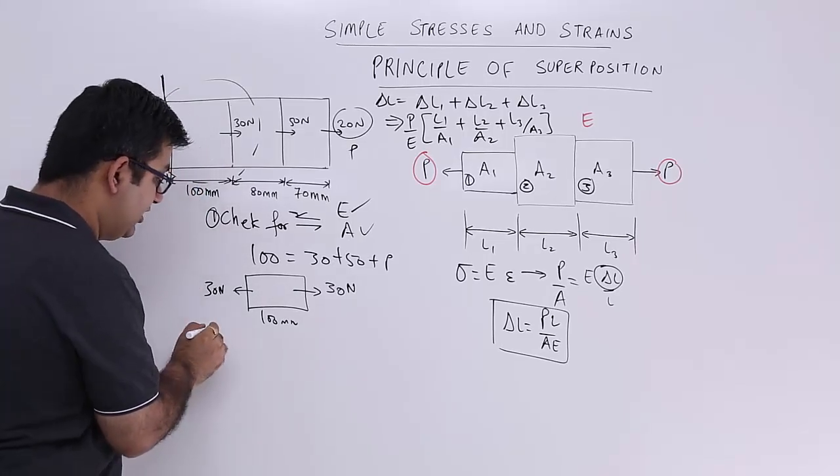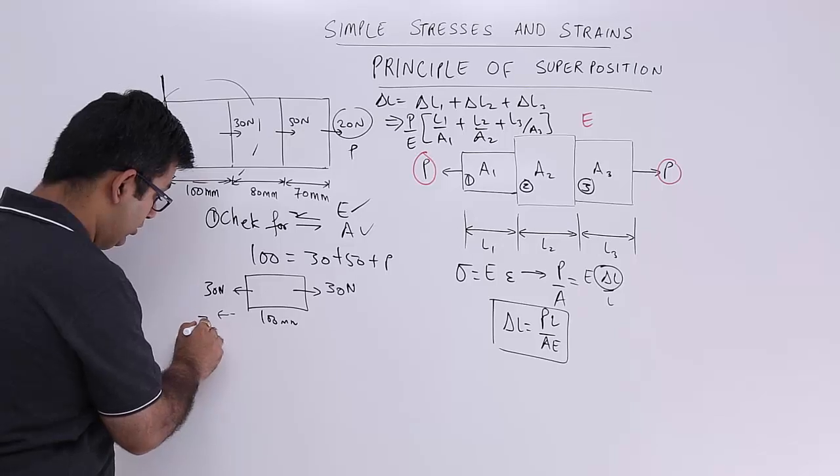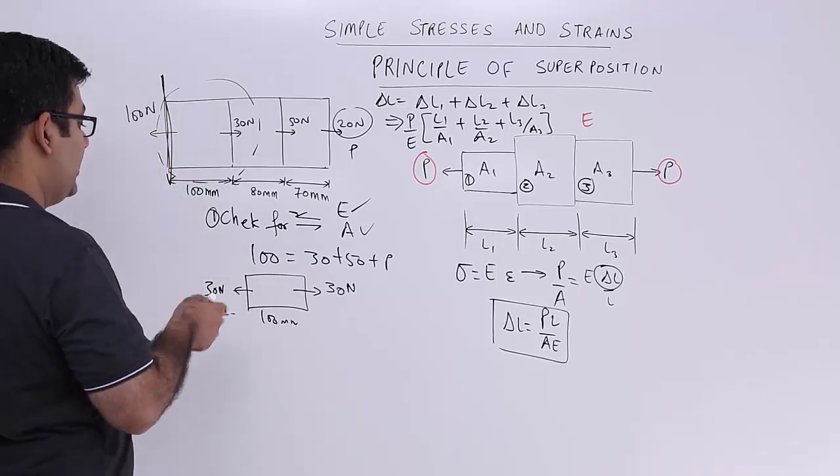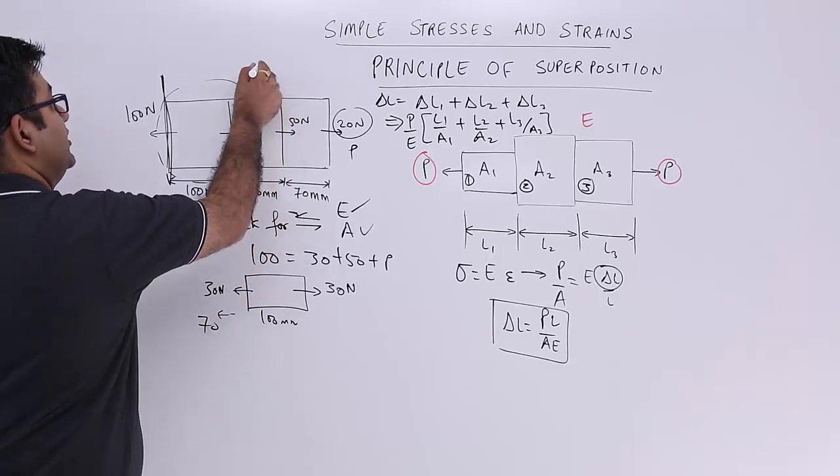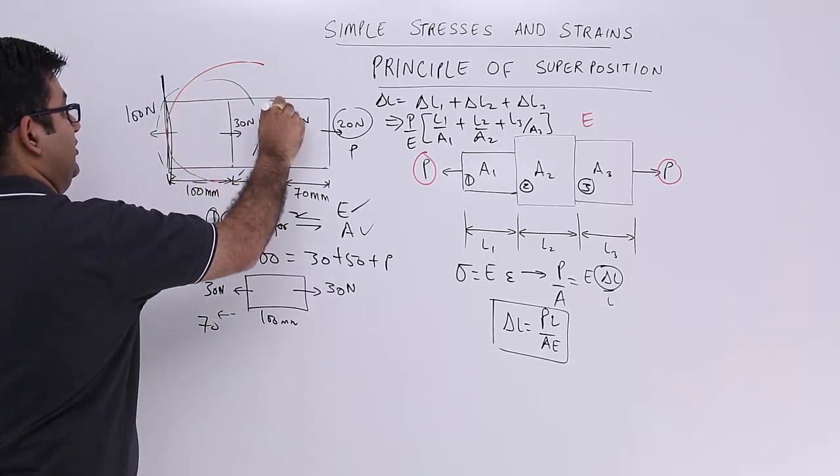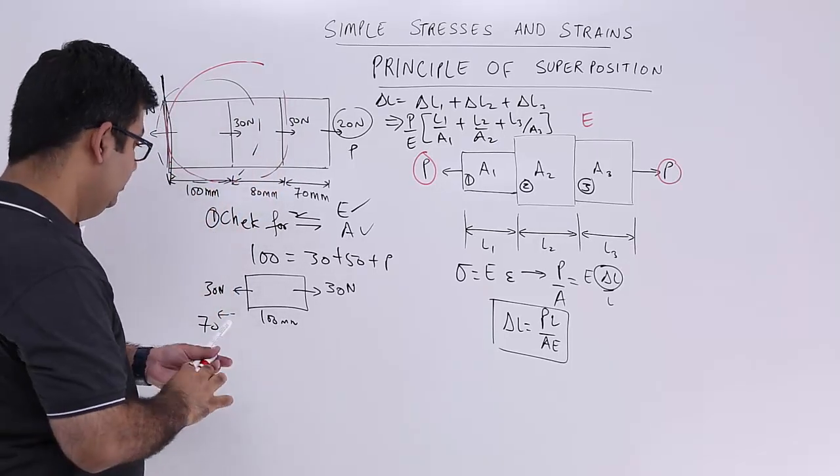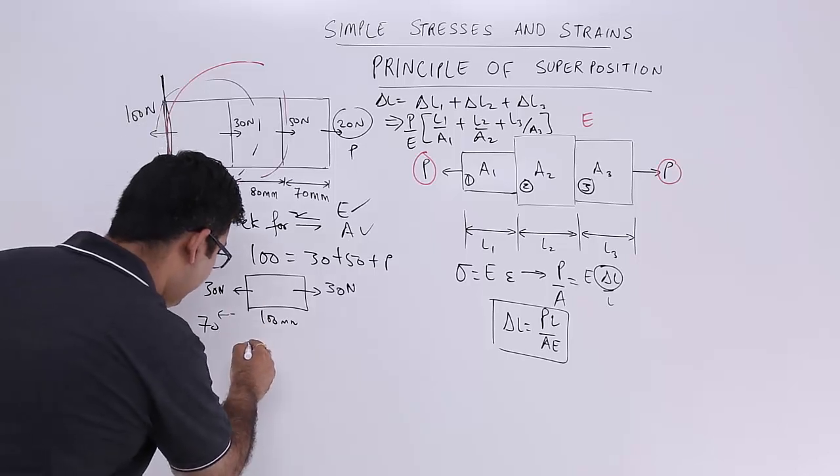On this particular section that is this left hand section, I still have a surplus of 70 Newton. Okay now what will I do? I will take this entire section. This and 50. So what will I do? I will draw a figure below this.